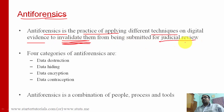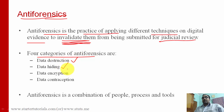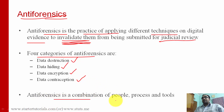The goal is to prevent evidence from being submitted for judicial review. There are four categories of anti-forensics: data destruction, data hiding (where you can use techniques like steganography for hiding data), data encryption, and data contraception. Like security, anti-forensics is a combination of people, process, and tools.